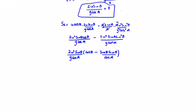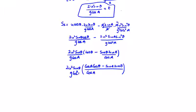Bringing the bracket together and cross-multiplying, we get cos alpha cos theta minus sin alpha sin theta over cos alpha. Using the trig identity from the tables, cos A cos B minus sin A sin B equals cos of A plus B.